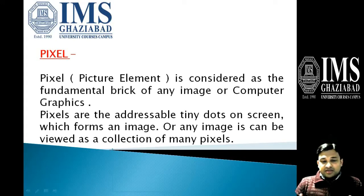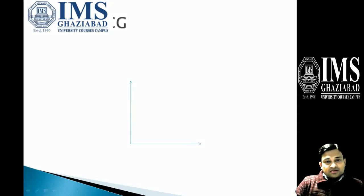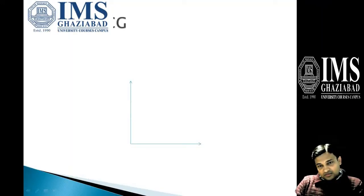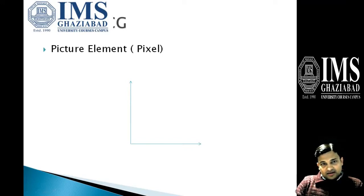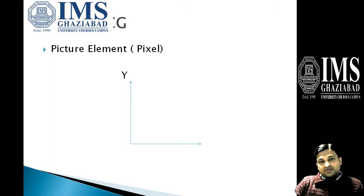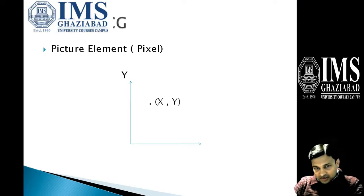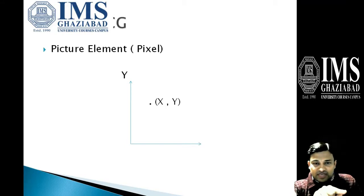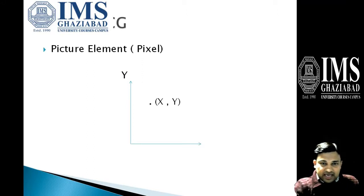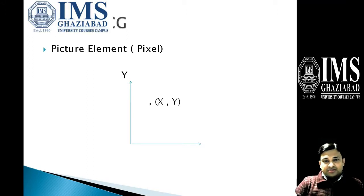Any image is a collection of a number of pixels. For instance, we can see on the screen there is an XY plane. In that XY plane we can show the pixel — the Y direction is vertical and the X direction is horizontal. This is an addressable tiny dot which moves in the X direction horizontally and the Y direction vertically, so X and Y are the addressable pixel points.